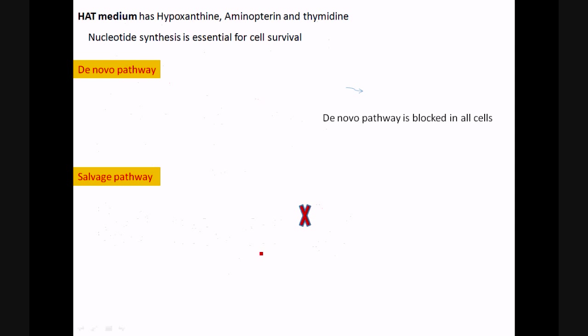This is HAT medium, how HAT medium works. HAT medium has three chemicals: hypoxanthine, aminopterin, and thymidine. For any cell, nucleotide synthesis is essential for cell survival. There are two pathways by which nucleotides are synthesized.